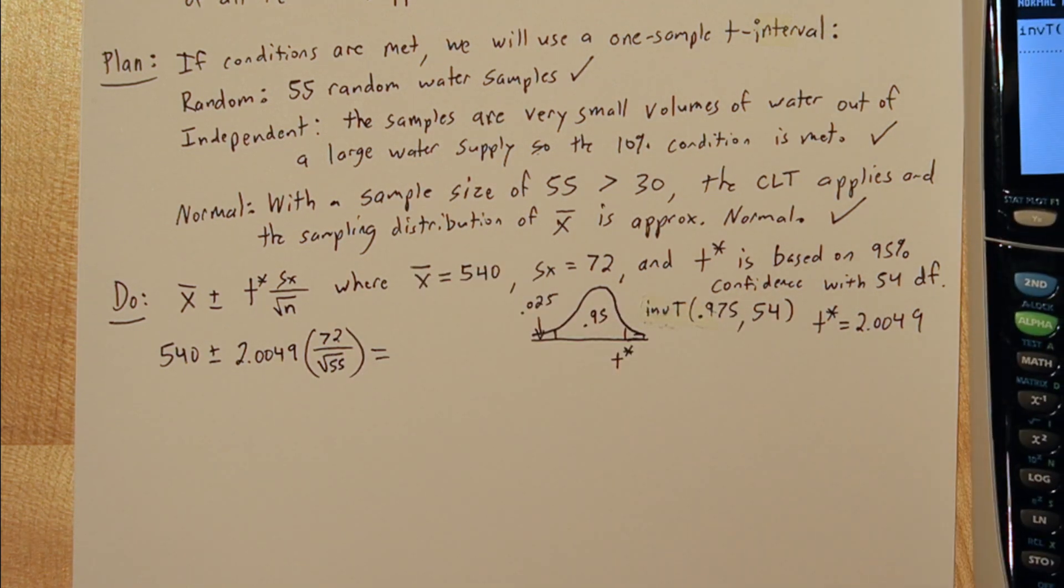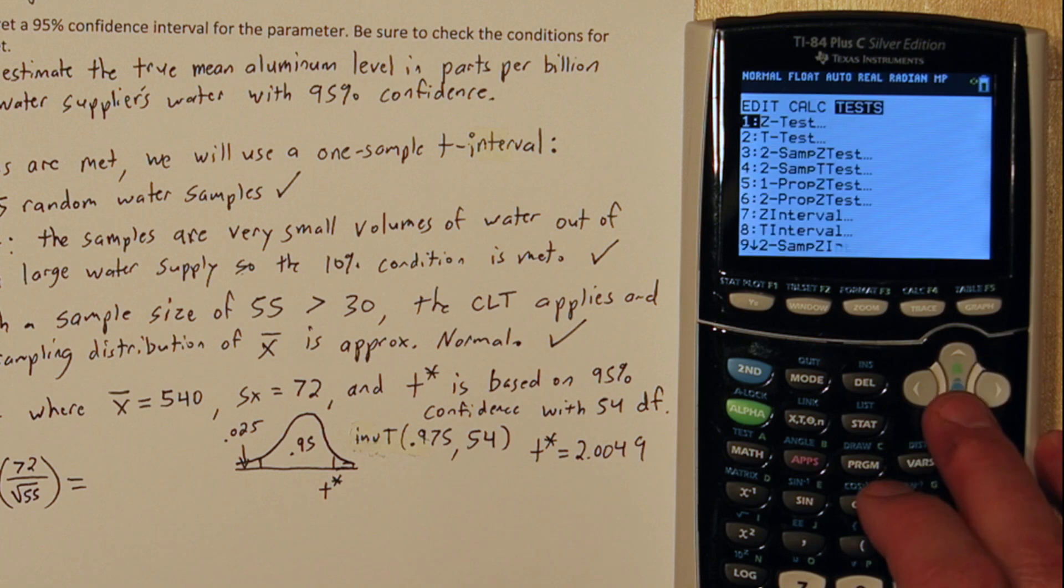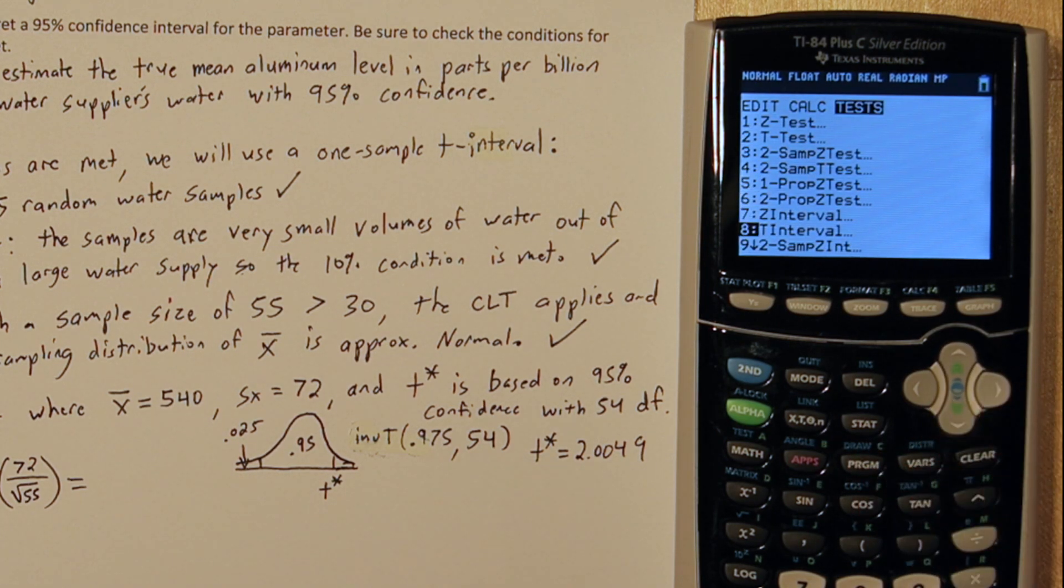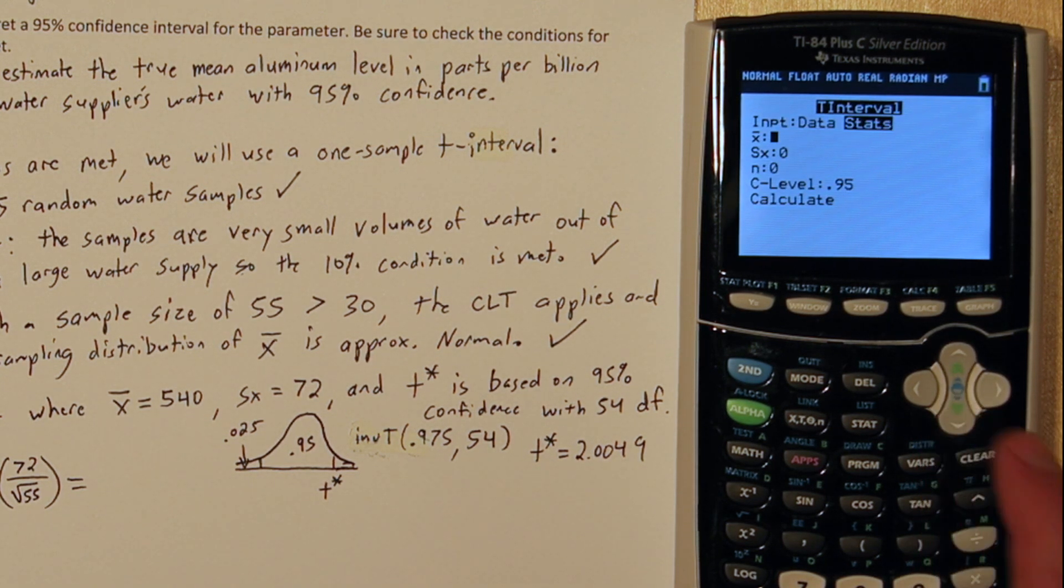But you don't have to calculate this interval manually. Press the stat button and go over to test. Near the bottom is the option t interval. Now you can either input raw data or stats. We have the summary statistics in this case. So for mean, put 540, which is the sample mean aluminum level we found in our sample.